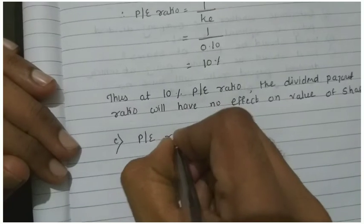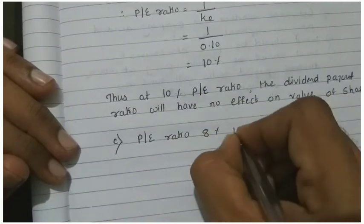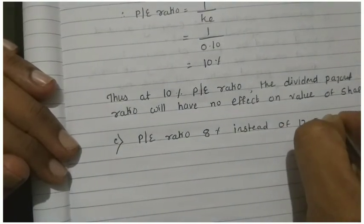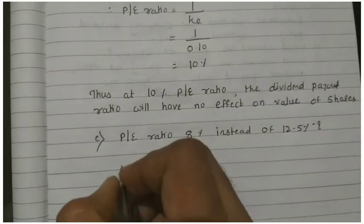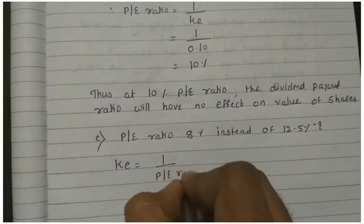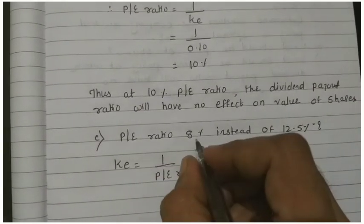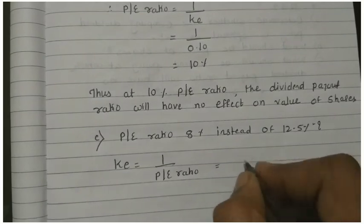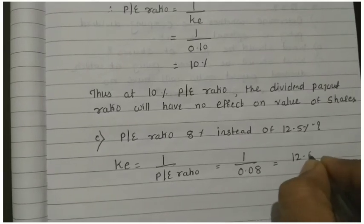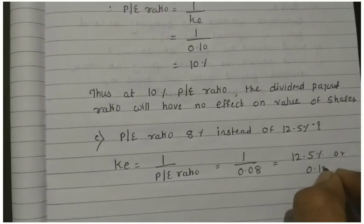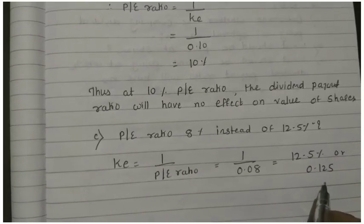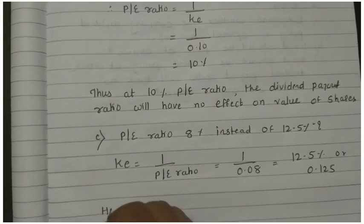P/E ratio should be, P/E ratio is 8 instead of 12.5. Now your question is P/E ratio 8% instead of 12.5%, so this will change. If P/E ratio changes, then KE will change. So KE is 1 upon P/E ratio. P/E ratio 8% instead of 12, so 1 upon 0.08, your answer will be 12.5% or 0.125. So KE becomes 0.125.